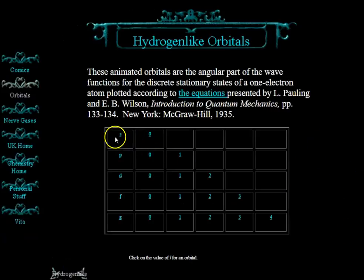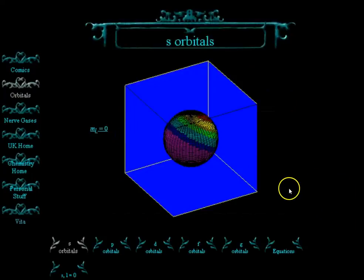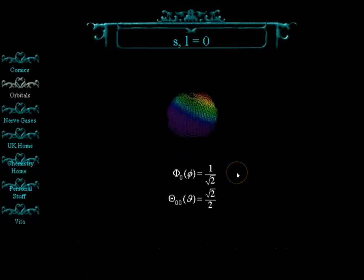And so going in the orbital tab and then clicking on hydrogen-like orbitals, what we can do here is we can see that there are S, P, D, and F orbitals that you can look at. So starting with an S orbital, remember I said that the S orbital is the first of the sublevels, and it is spherical in shape. And if you actually click on it, you can set it in motion.